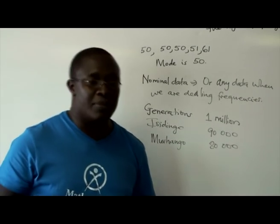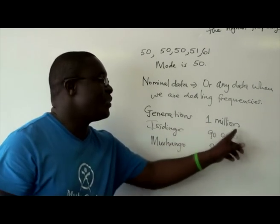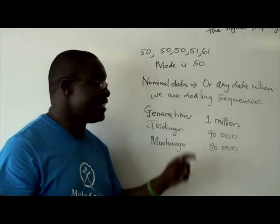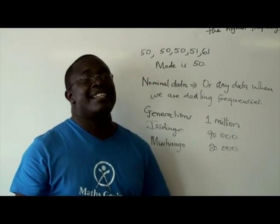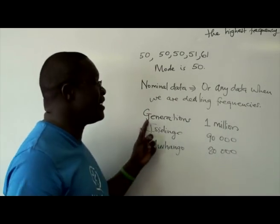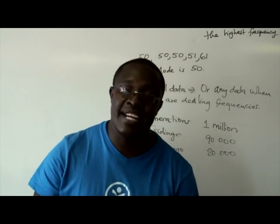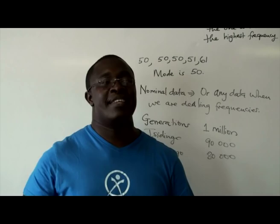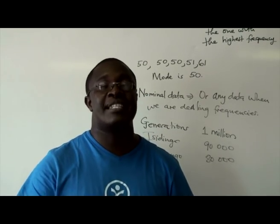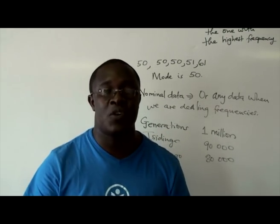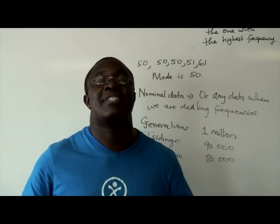So if I was to close my eyes and throw a stone at random, the probability of hitting someone who watches Generations is obviously higher than Isidingo or Mufango. That means that generally, typically, people in South Africa will watch Generations as opposed to Isidingo. Things like ratings, voting, and counting — the one with the highest frequency is the most common, and therefore that is the best average to use since that is how we're measuring representativeness.